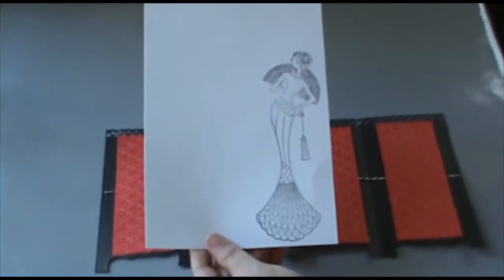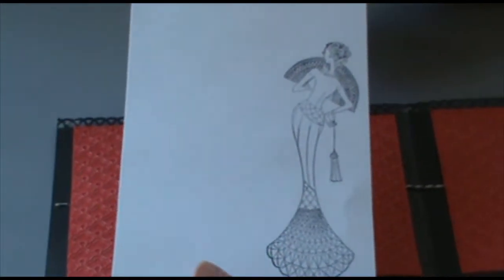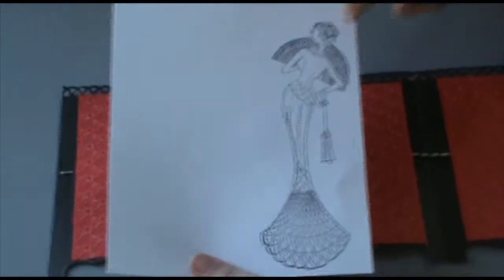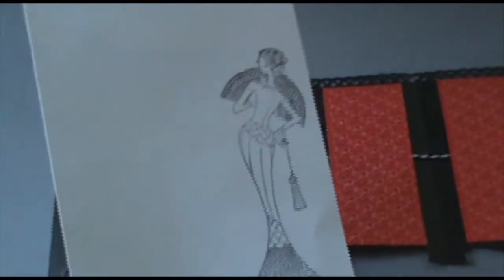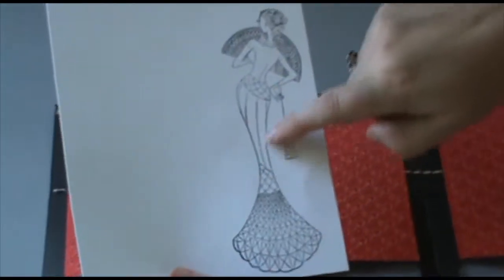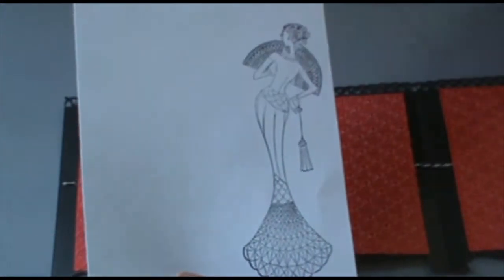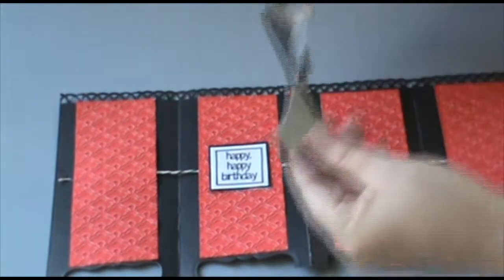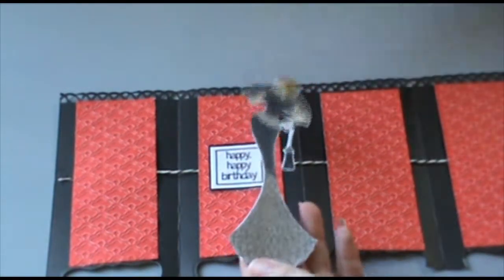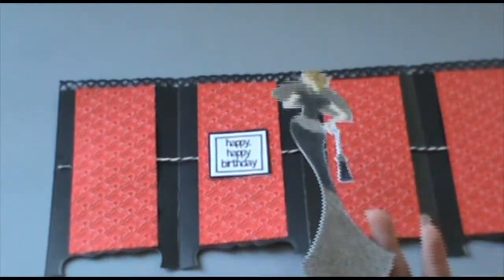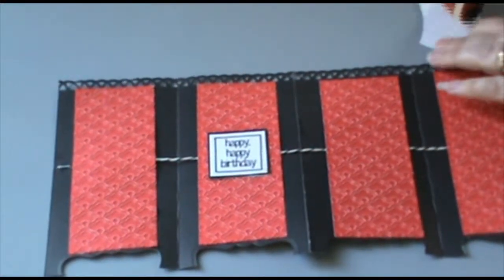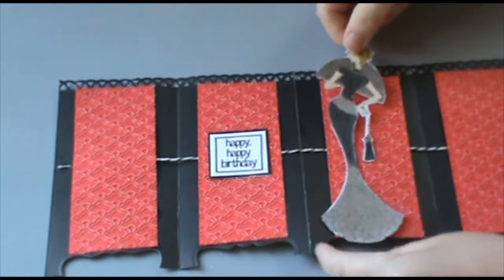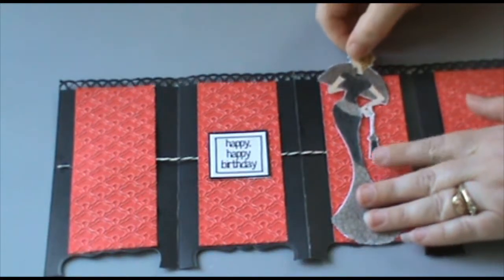Then color that with your favorite markers, pencils, whatever you would like—watercolors, paints, whatever medium you choose. Then fussy cut it out. Just get in there with a pair of scissors or a craft knife to get into those small areas. Here's the one that I chose for this card. We will again use our tape runner and put some tape on her. Stick her right on, and I make sure she's lined up at the bottom of the card.